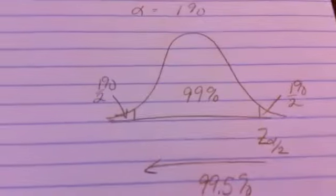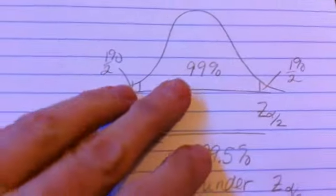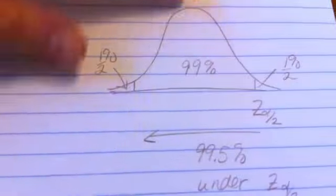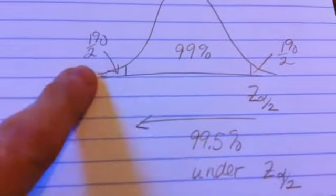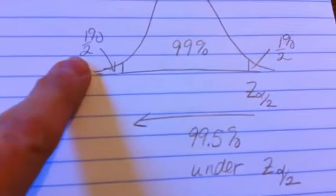And drawing that out, what that looks like, so 99% is what is in the middle. And then we split the 1% evenly between the tails, so I'm going to have a half a percent in each tail.